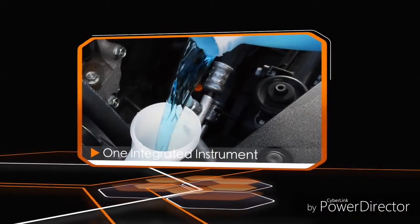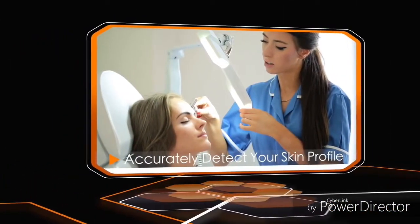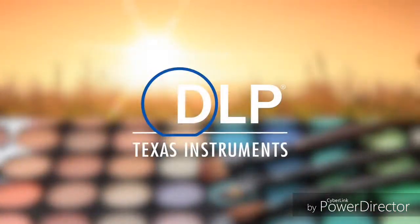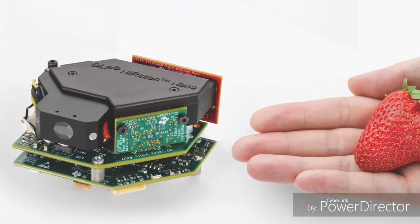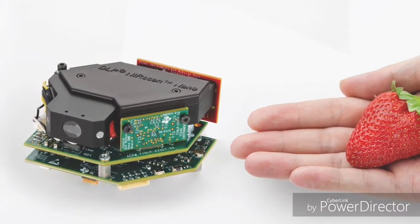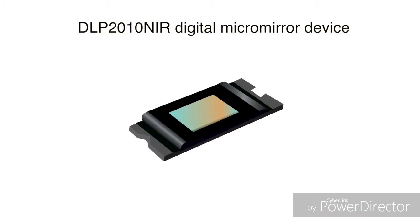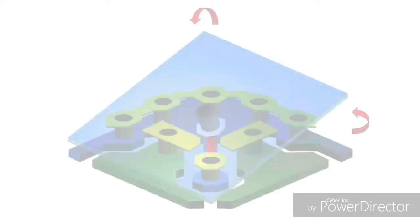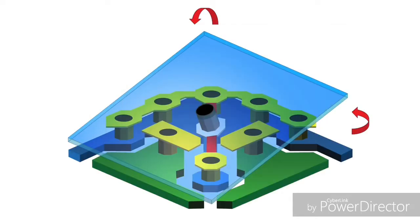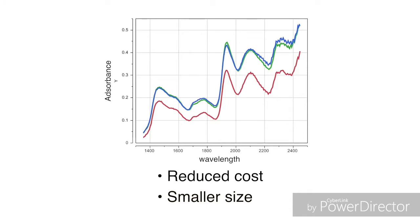Eliminate multiple techniques and equipment by using one integrated instrument for engine fluid health analysis. Imagine being able to accurately detect your unique skin profile. From crops to cosmetics, TI DLP technology now allows you to bring the sensing and analytics of the lab to the field. Analyze materials from the palm of your hand and design with the smallest, most efficient DLP chip for mobile, Bluetooth-enabled, near-infrared sensing measurements. The new DLP 2010 NIR digital micromirror device is a programmable MEMS solution leveraging the latest DLP 5.4 micron pixel for high optical resolution in a smaller form factor, reducing cost and size for compact NIR sensing solutions.